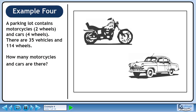A parking lot contains motorcycles and cars. There are 35 vehicles and 114 wheels. How many motorcycles and cars are there?